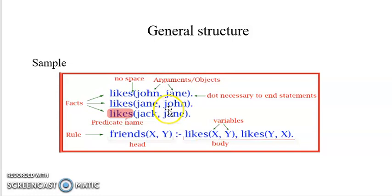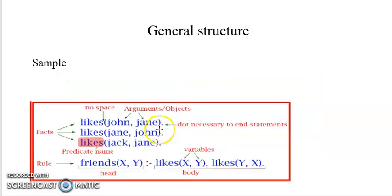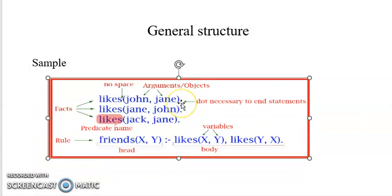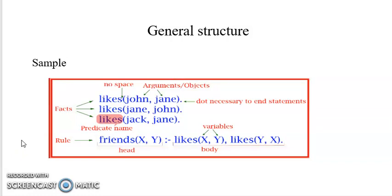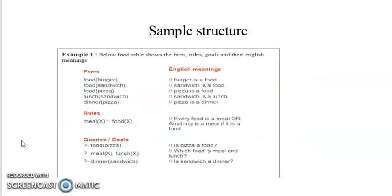This general rule is mandatory. From the individual facts, we can check using this rule whether someone is a friend of another or not. So when defining a knowledge base it is recommended to include individual facts and also rules, if rules are needed.